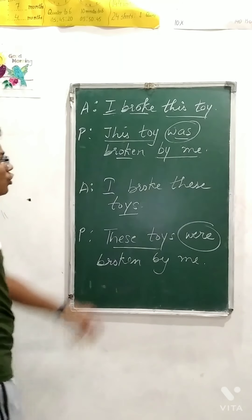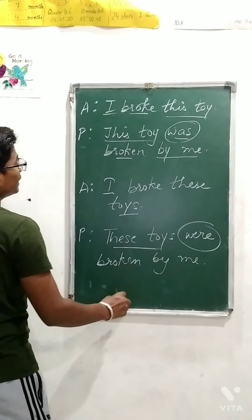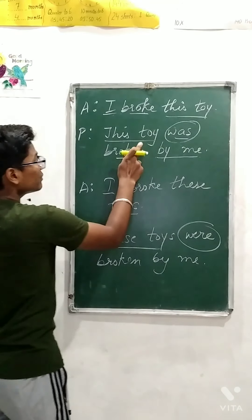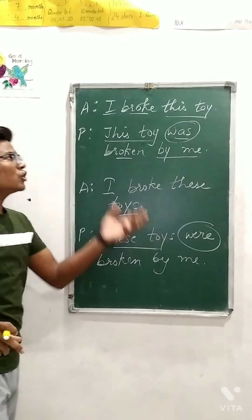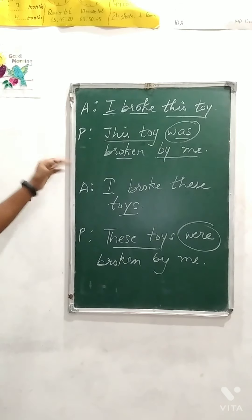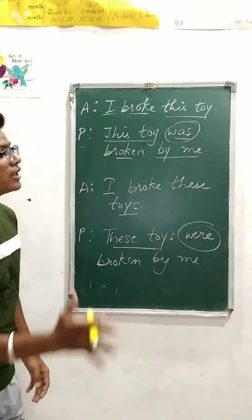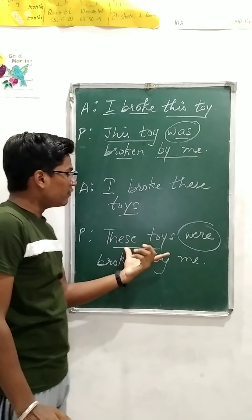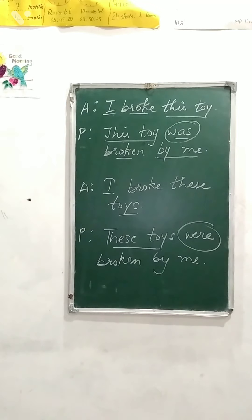The helping verb must agree with the subject — this is subject-verb agreement. If the subject is singular, use a singular verb; if it is plural, use a plural verb. For example, if the subject is 'this toy' which is singular, 'was' comes. So subject-verb agreement is also a part of passive voice construction.